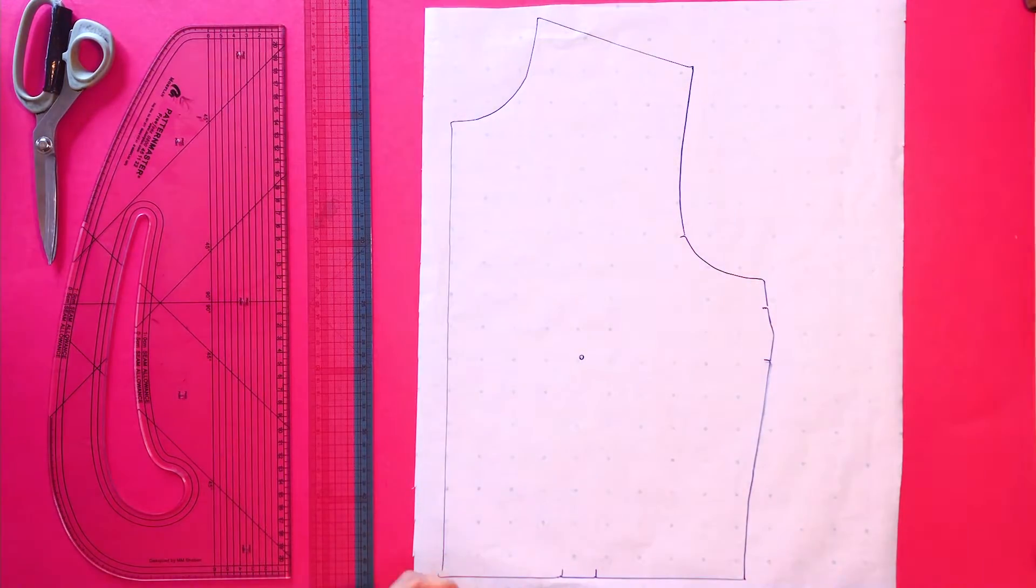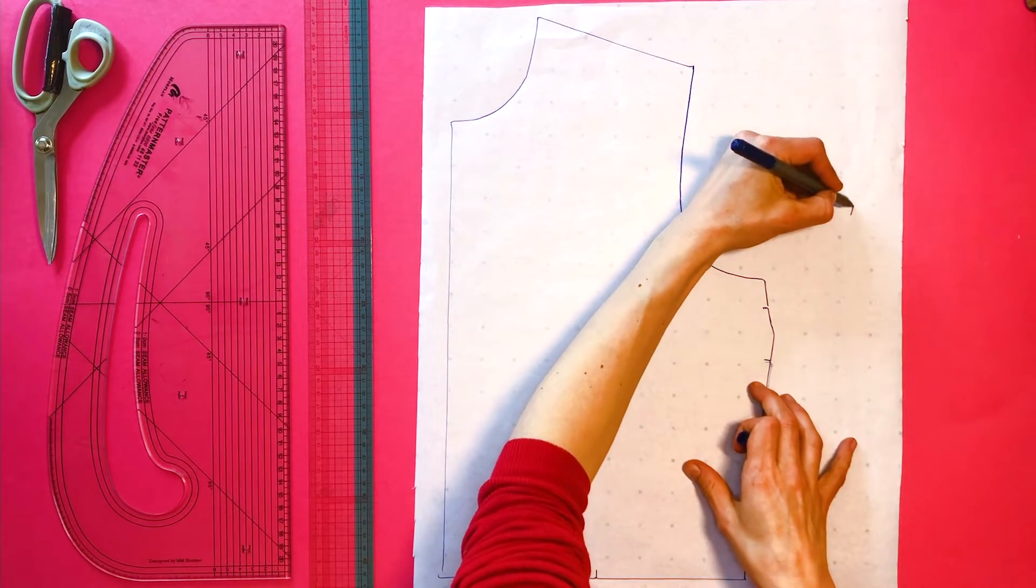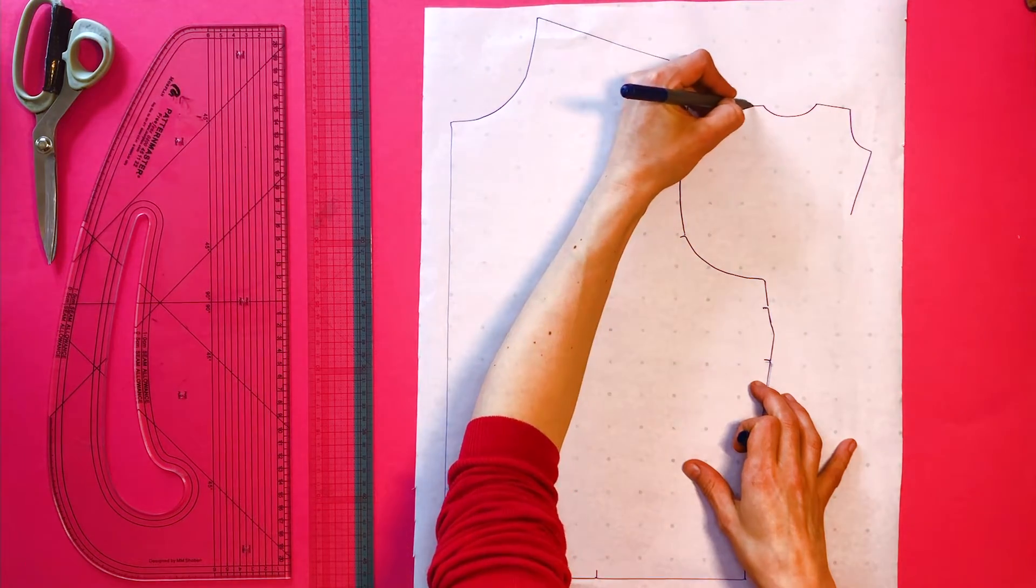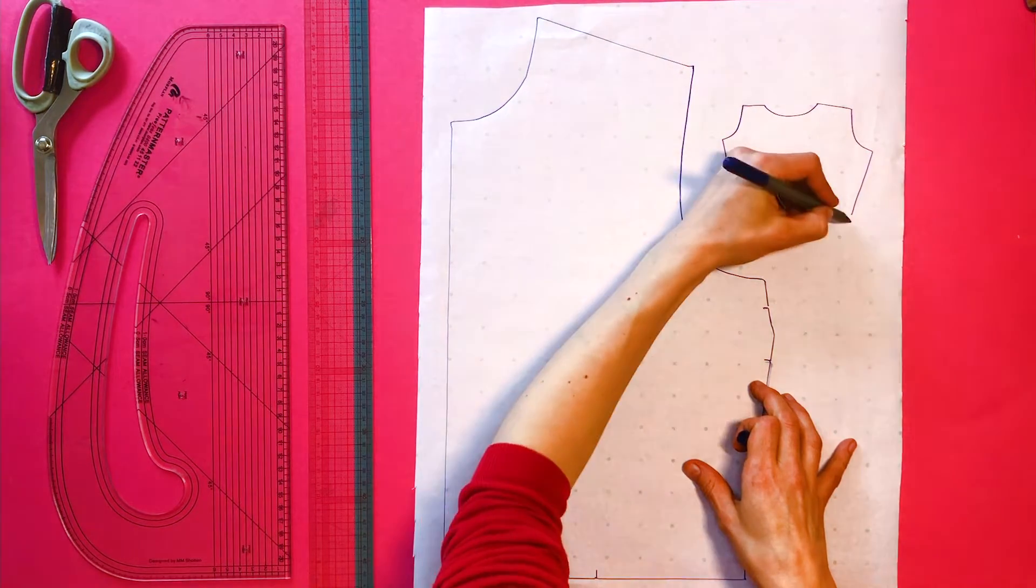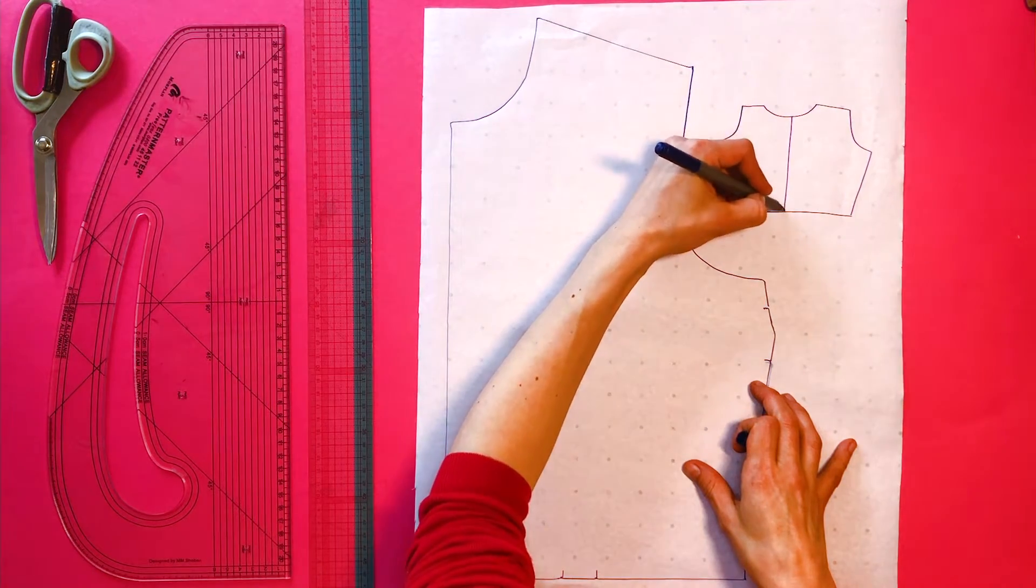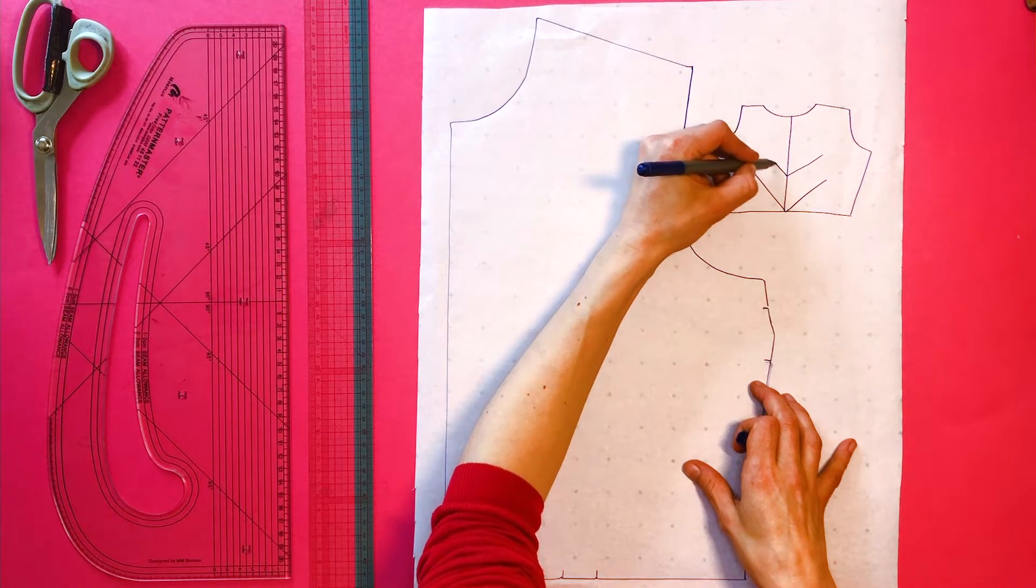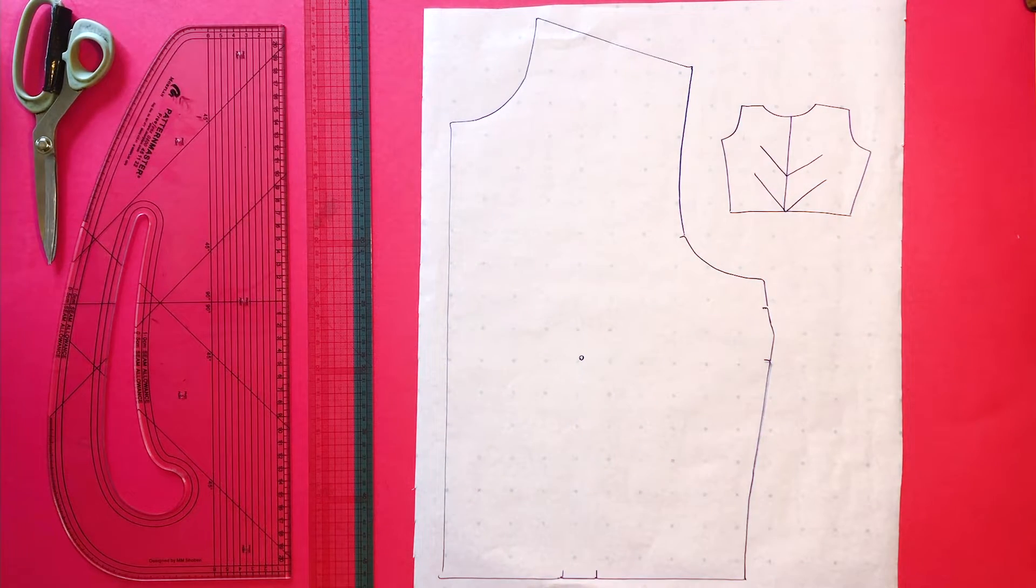By the time I'm finished, this is going to look like this. That's my front. It's going to have a center front seam and then two lots of darts, so it's got a nice v-shape.